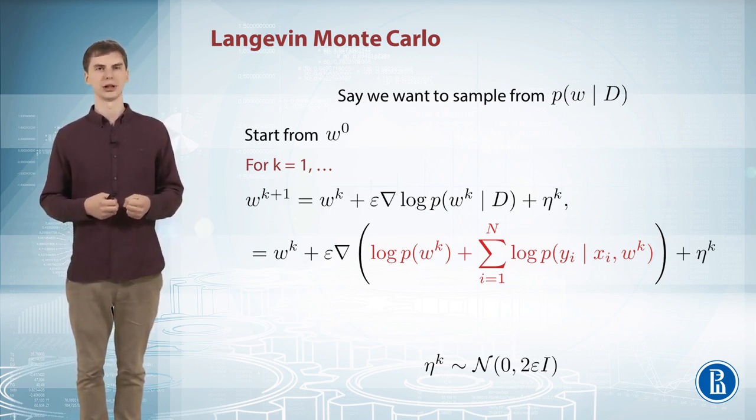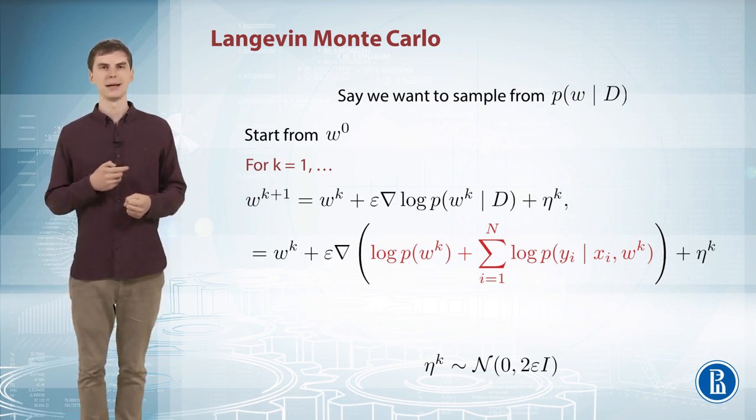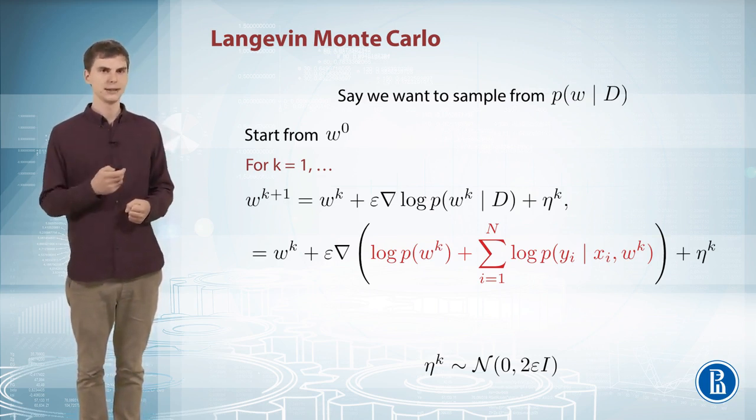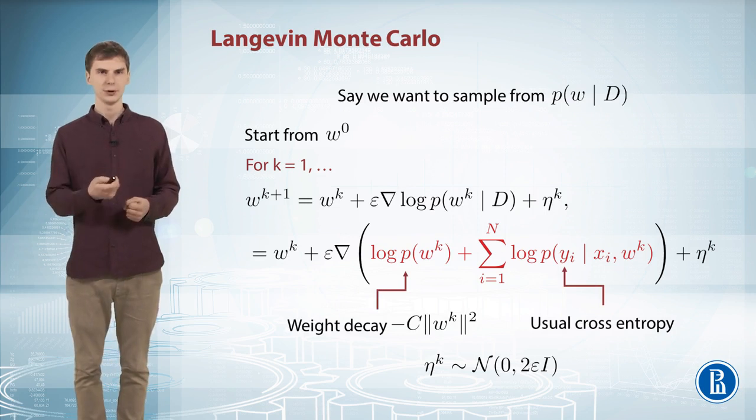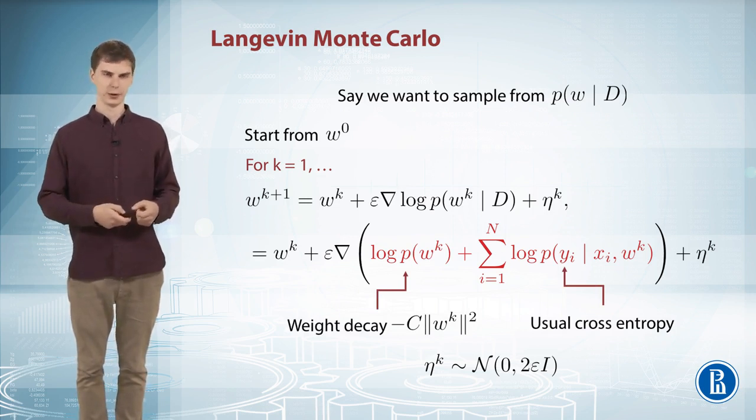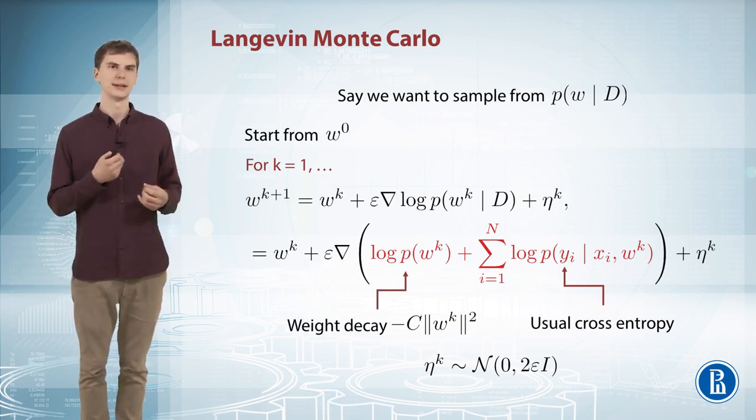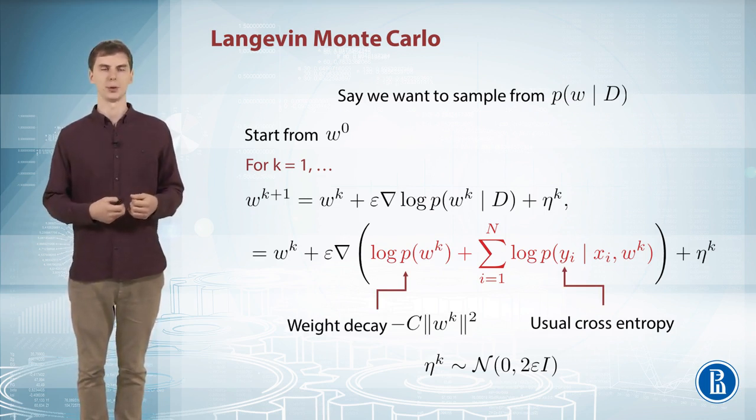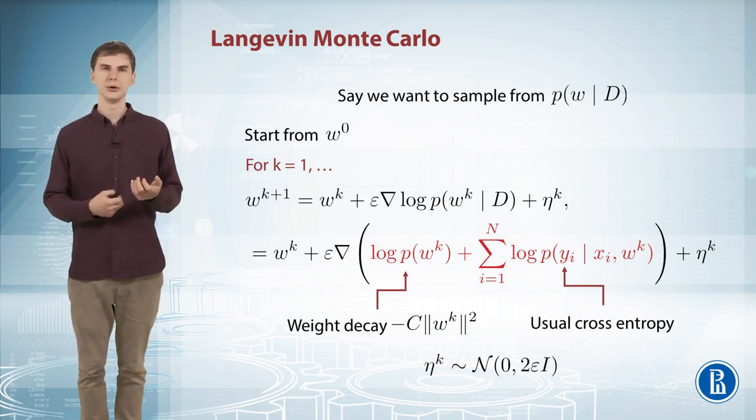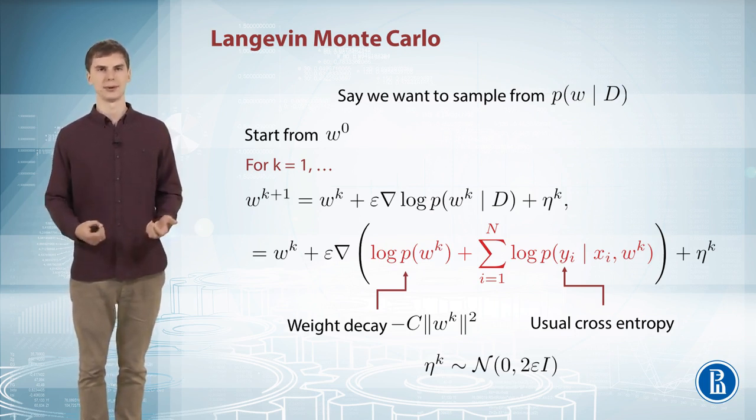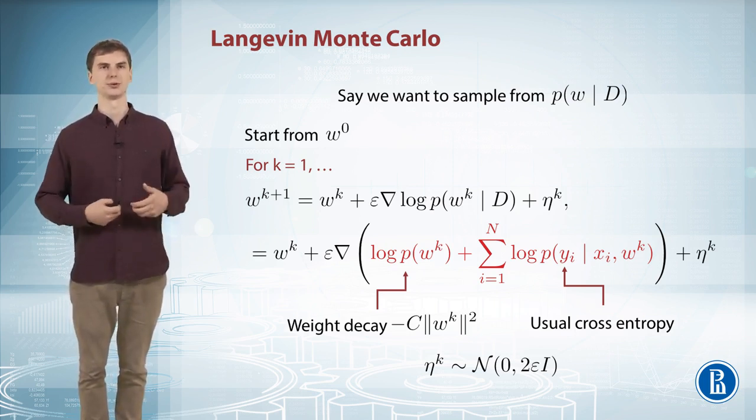And you should also have a normalization constant here z, but it's a constant with respect to our optimization problem so we don't care about it. And on practice this first term, the prior, if you look at the logarithm of a standard normal distribution for example, you just get some constant times the Euclidean norm of your weight w. So it's your usual weight decay which people often use in neural networks. And the second term is usual cross-entropy, usual objective that people use to train neural networks.